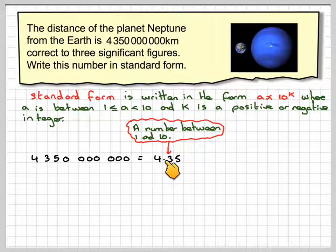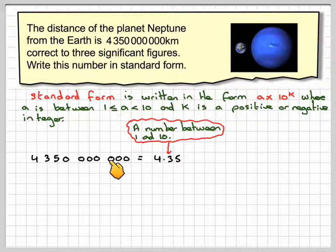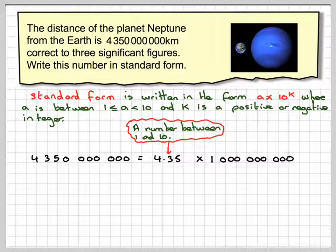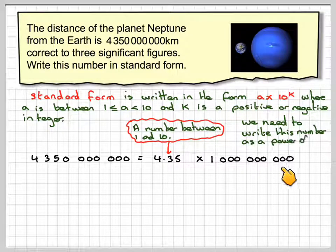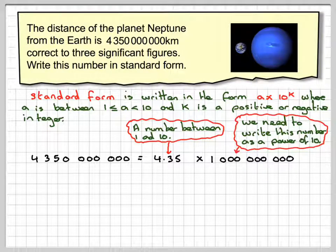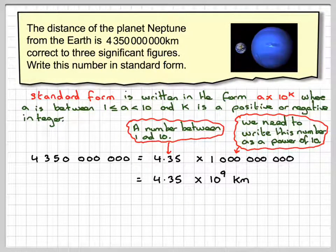Now, what do I have to multiply this by in order to get back to that? Well, I'm going to have to multiply it by 1, 2, 3, 4, 5, 6, 7, 8, 9. So that's 1 billion. I need to write this number as a power of 10. So that's going to be 4.35 times 10 to the power of 9, because there's nine zeros in kilometers.